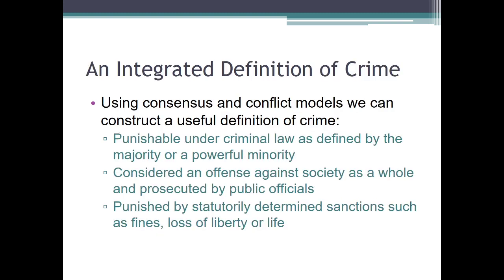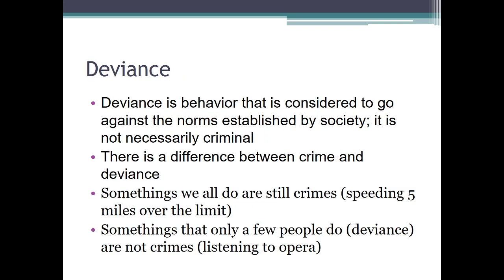An integrated definition of crime, though, does kind of push these together. Using consensus and conflict together, we can construct that crime is punishable under the criminal law — as defined by a majority or powerful minority — an offense against society as a whole, prosecuted by public officials, and punished by fines, loss of liberty, or life. That kind of brings us through the whole process of deciding something is illegal, why we make this decision, and then imposing the penalties.